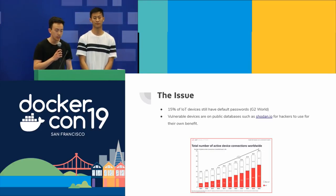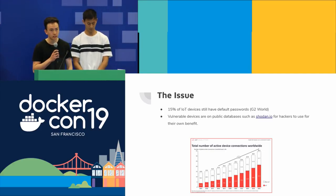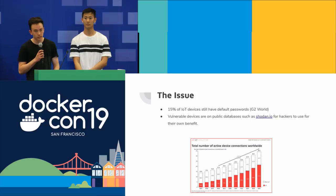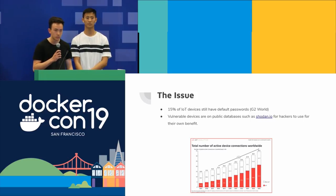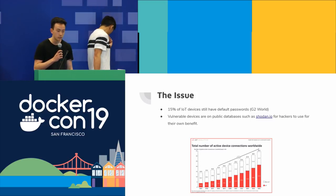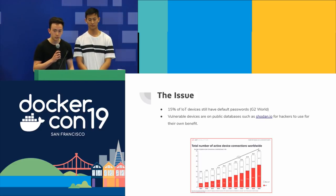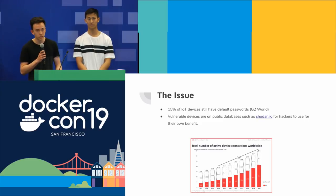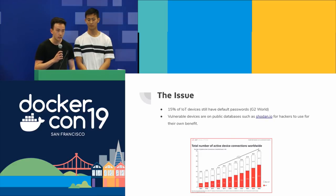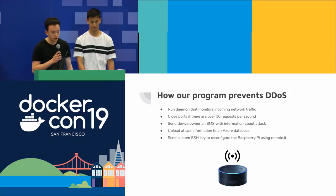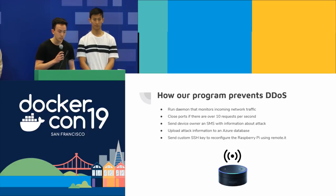The issue we found was that IoT devices — hackers hack into IoT devices with default passwords and use those devices to access other devices on the network. According to G2World, about 15% of IoT devices still have default passwords. So they're really vulnerable, and people can use them to create really large botnets that can take down entire servers. The cybersecurity attack we decided to prevent was DDoSing.